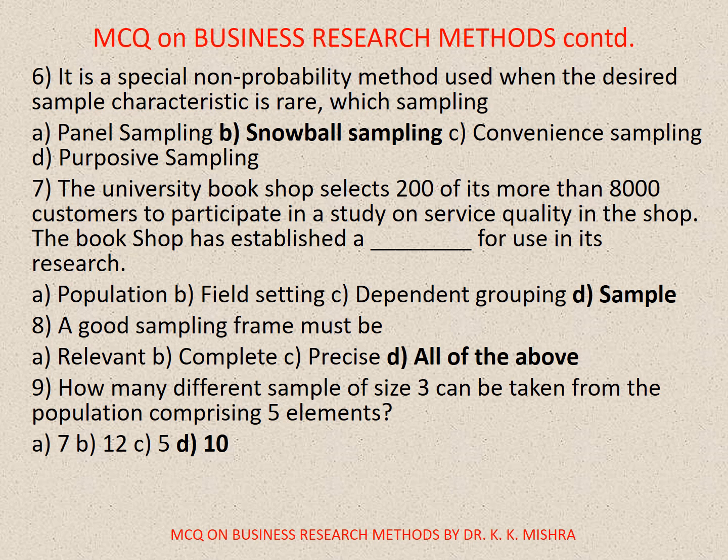Question number 7. The university bookshop selects 200 of its more than 8,000 customers to participate in a study on service quality in the shop. The bookshop has established a basis for use in its research. Options are: A. Population, B. Field setting, C. Dependent grouping, D. Sample. Correct option is D. Sample.